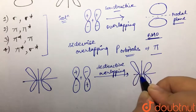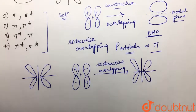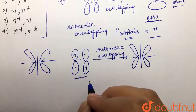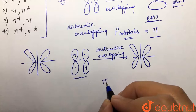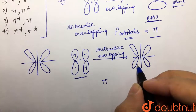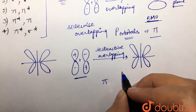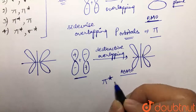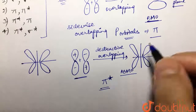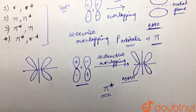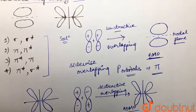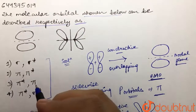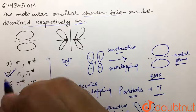Because there is destructive overlapping, this is an antibonding molecular orbital. Again, since this is sidewise overlapping of p orbitals, this is a pi bond, and because it is destructive overlapping, we get an antibonding pi star (π*) molecular orbital. So the first is π and the second is π*, which matches option number two — our answer is option 2.